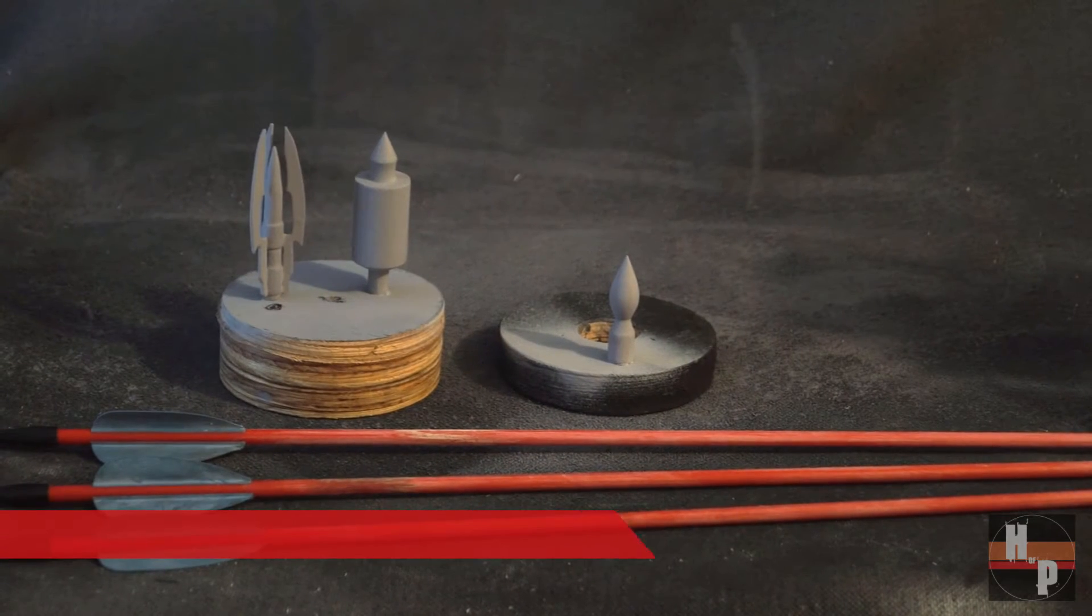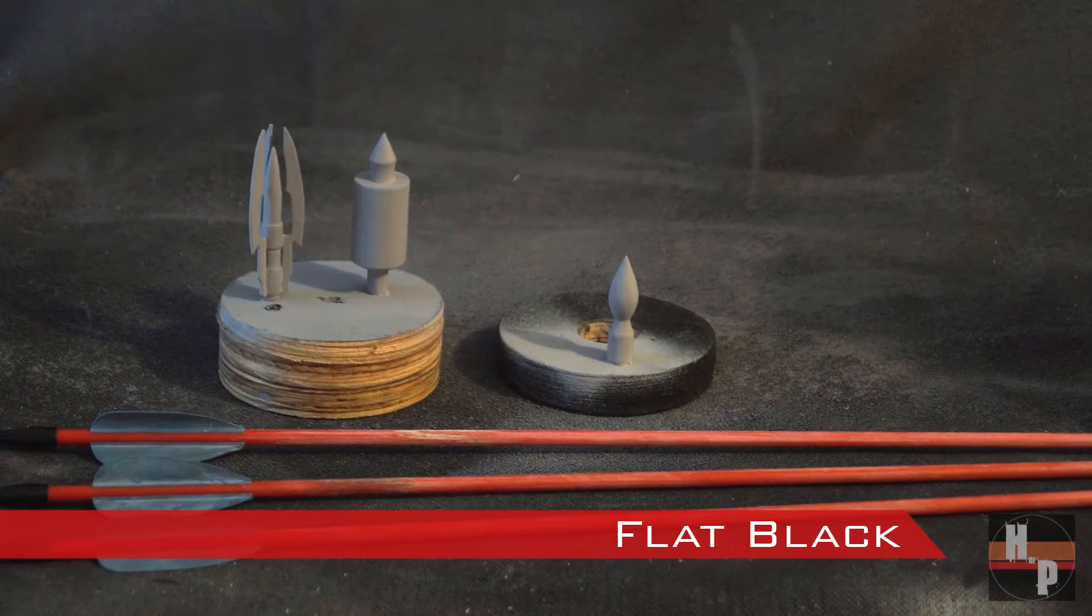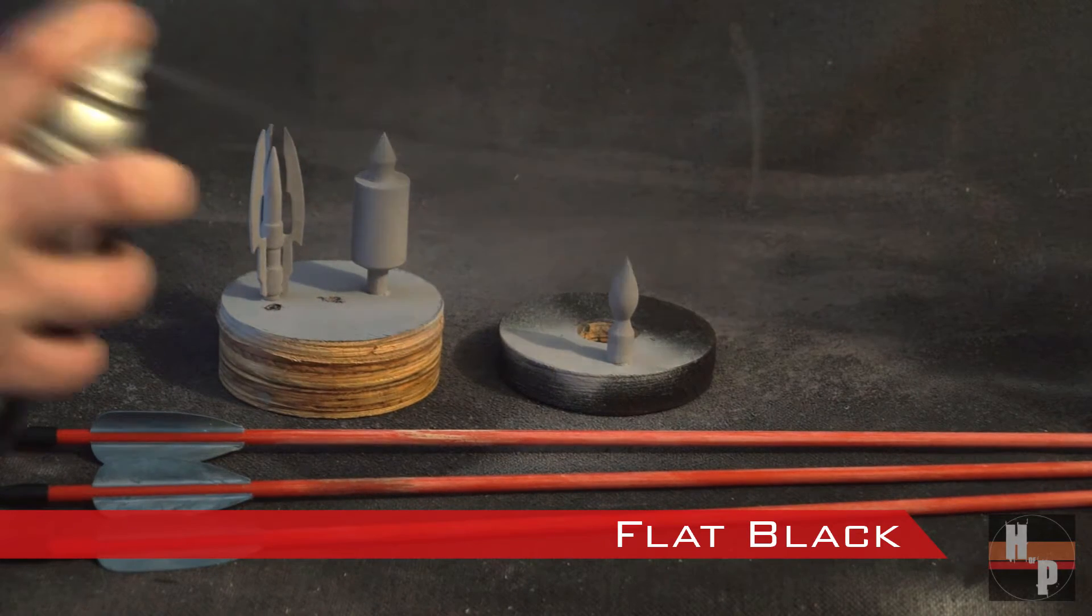When the primer dried, I sprayed all the pieces with a flat black spray paint. At this point, the standard tip had finished printing and was added into the mix.